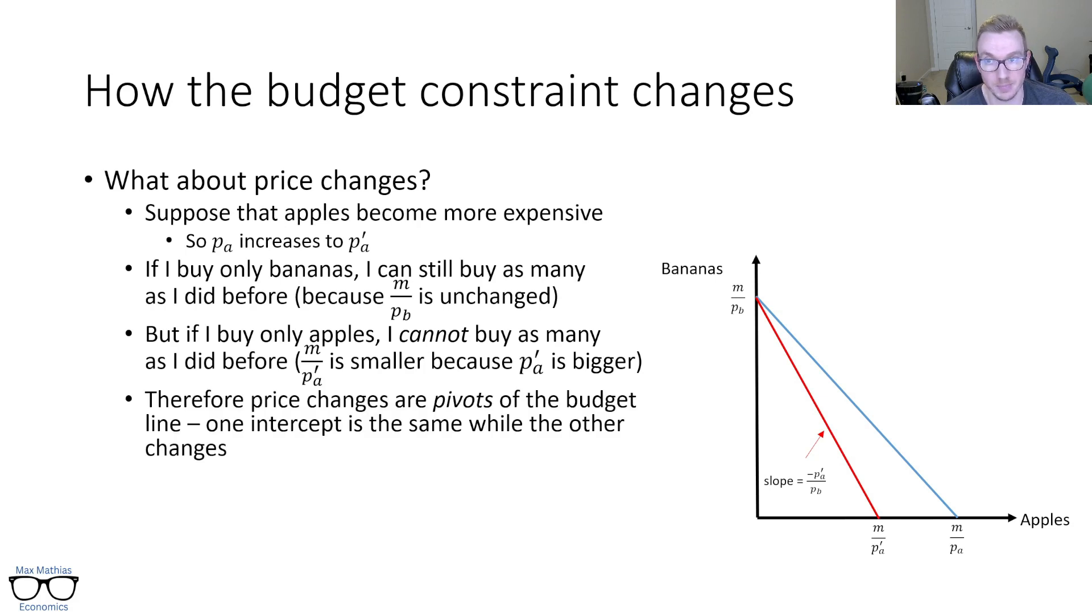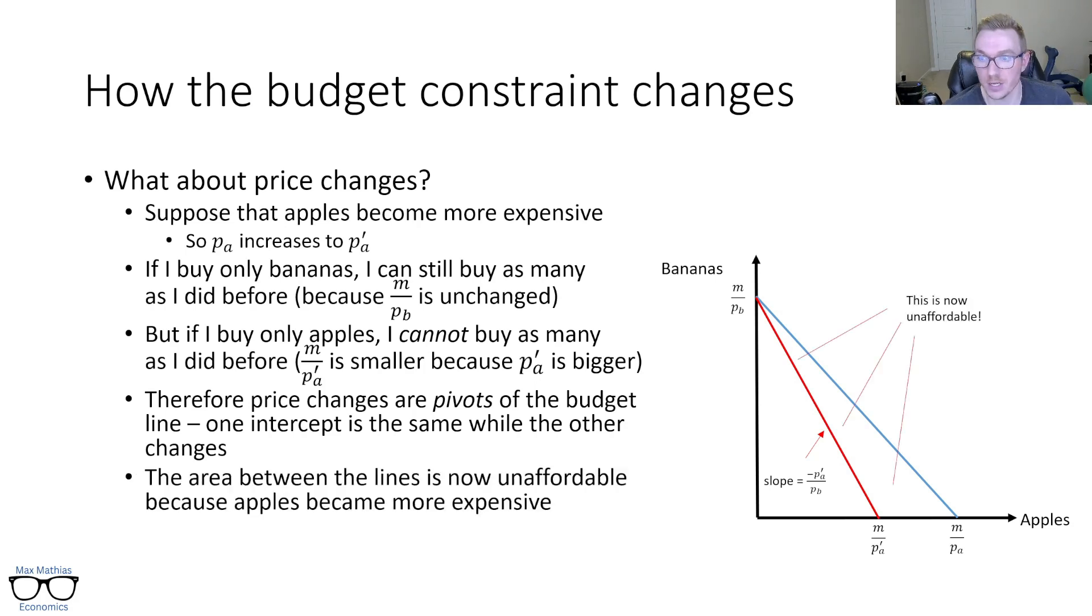So price changes I like to think of as pivots. One intercept is going to remain constant. It's always going to be the price that doesn't change while the other one changes. For price increases, it's kind of a pivot inward. For price decreases, it's a pivot outward. You can actually buy more than you could before. The area between the blue and the red budget lines are now unaffordable. And the reason why even we couldn't buy as many as we did before is because the opportunity cost of apples has increased as far as talking about bananas I have to give up. So if I want to spend any amount of apples, I'm now spending more money than I had to before. That means I can buy fewer bananas. So everywhere in between that blue and red line is now unaffordable because apples became more expensive, even though my income actually didn't change.